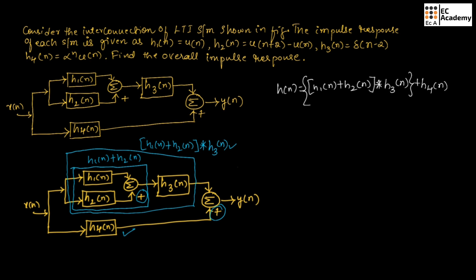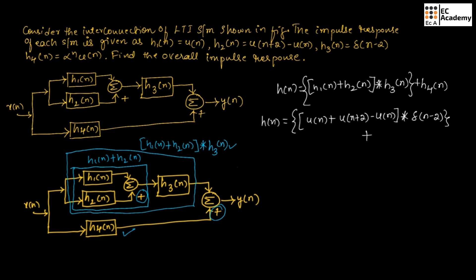We have the values for H1 of n, H2 of n, H3 of n, and H4 of n. We can substitute these values in this equation. We get H of n is equal to: substituting H1 of n which is U of n, plus H2 of n which is U of n plus 2 minus U of n, convoluted with H3 of n which is delta of n minus 2, plus H4 of n which is alpha to the power of n times U of n.